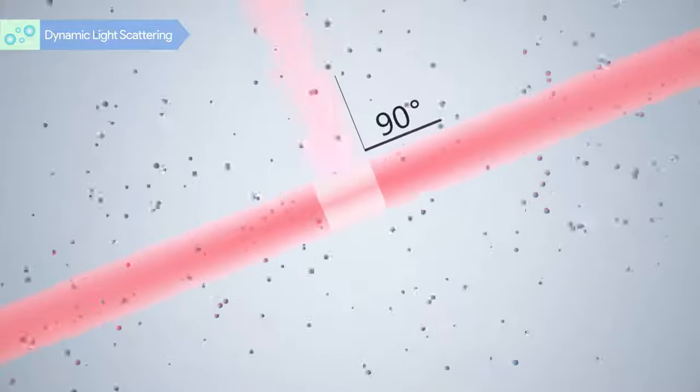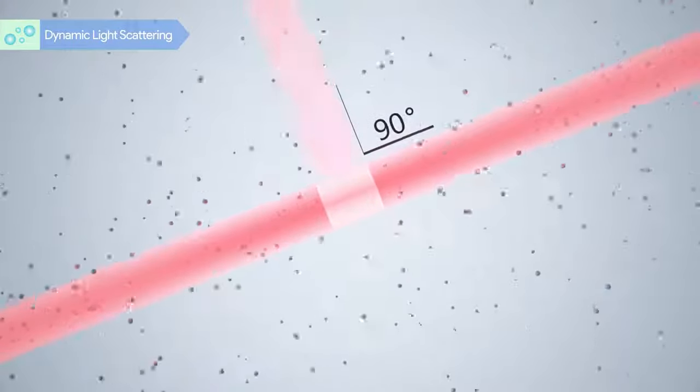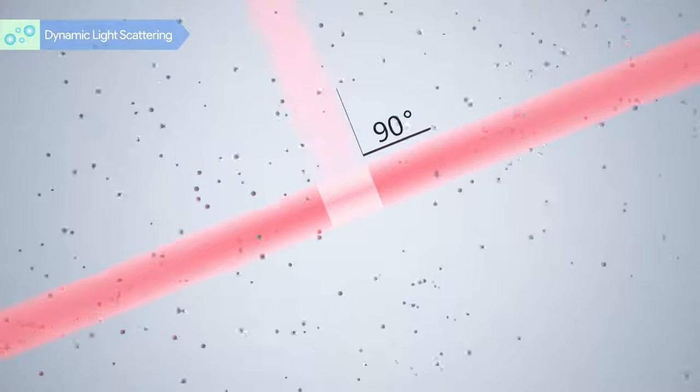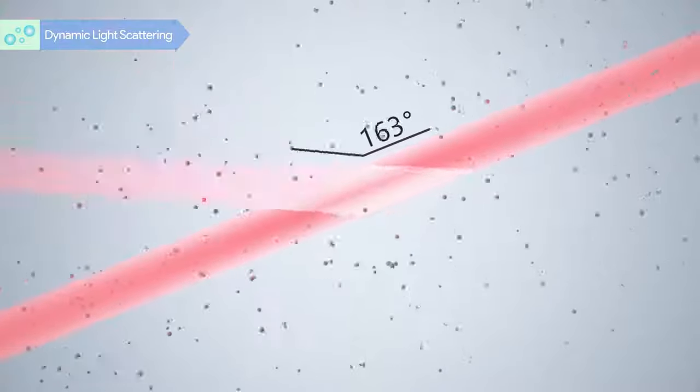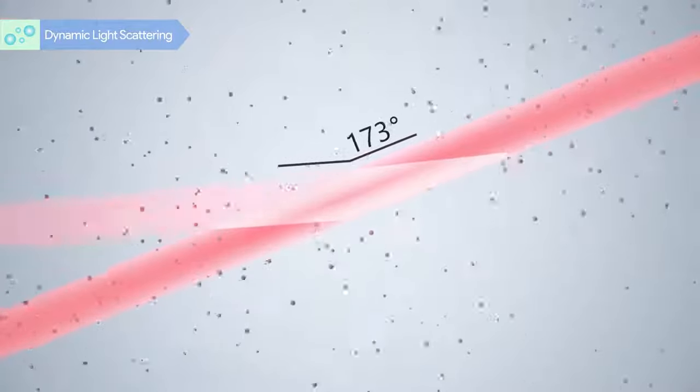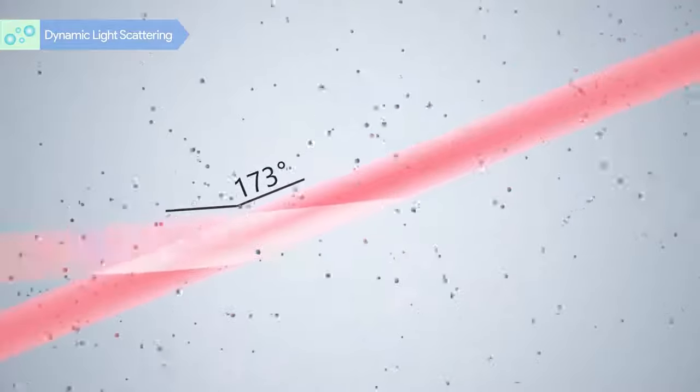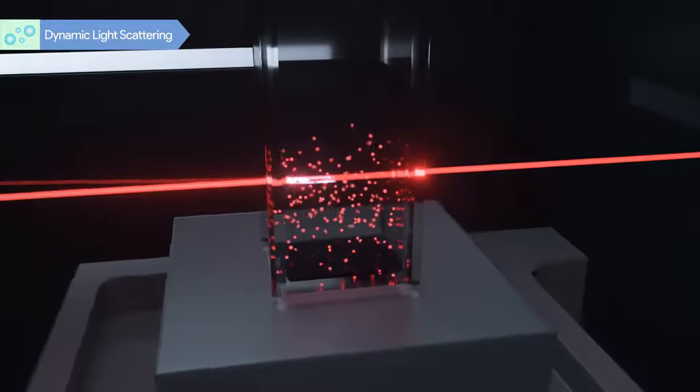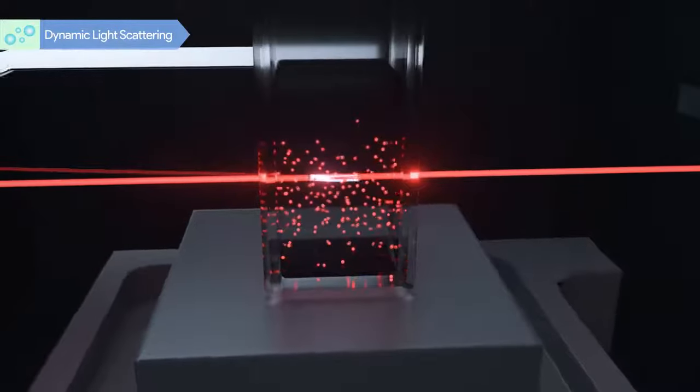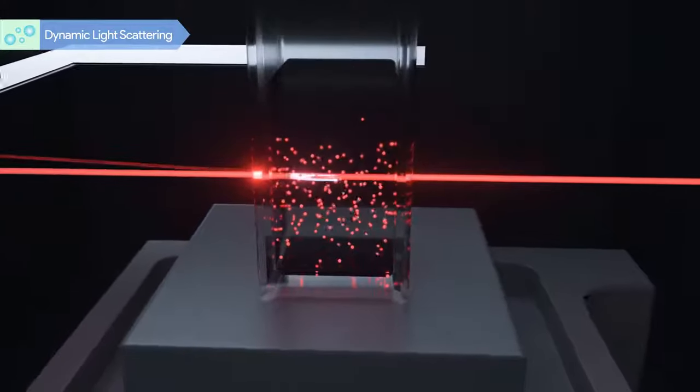The more advanced backscattering DLS technology adopted by B-Nano enables the detection of the scattering light at 173 degrees with a much larger scattering volume. Combined with the movable measurement position, B-Nano has much higher sensitivity and high turbidity sample measurement capacity.